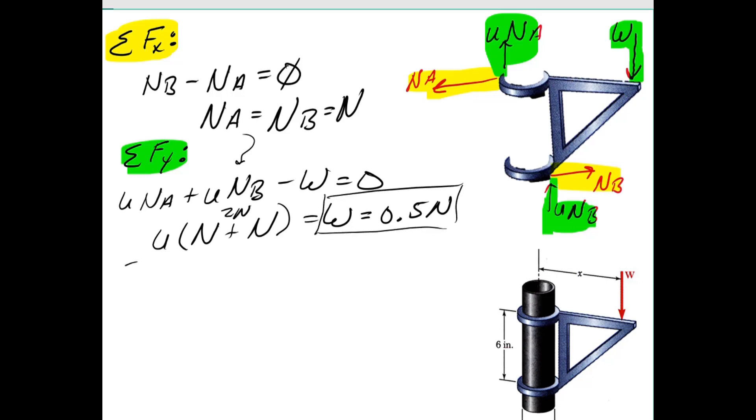And since we have two of those normal forces, then we can say two times 0.25. So we have 0.5 times N is what that weight is. So there is one relationship here. We still don't have anything for that distance x, so we need one more equation. And that is the moment. So what point should we take the moment around? Either A or B will be fine. Let's go ahead and take the moment around point B.